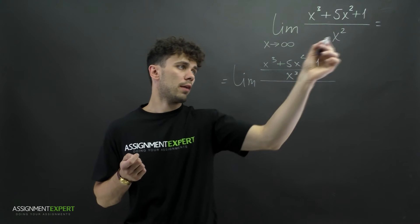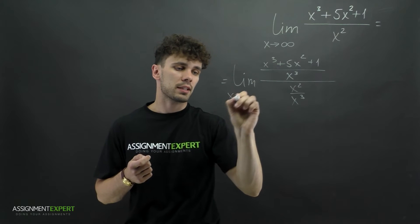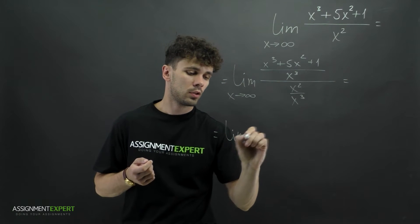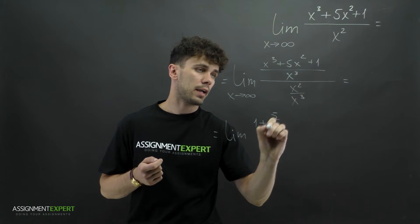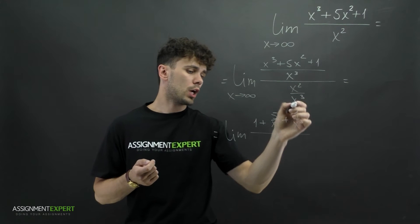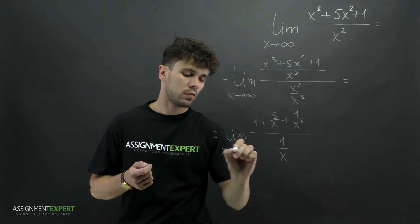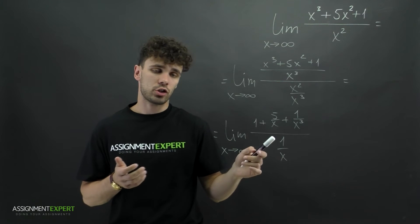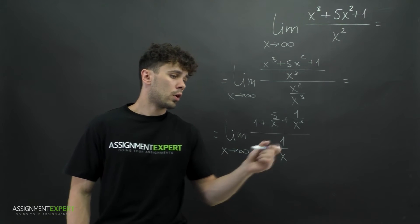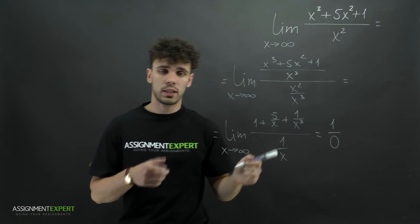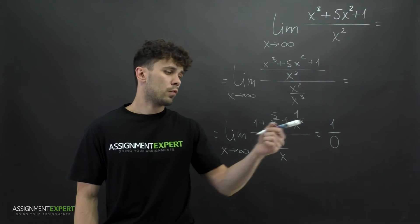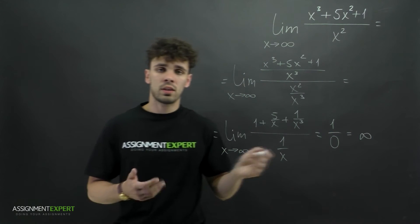We get the limit of (x cubed + 5x squared + 1) over x cubed in the numerator, and x squared over x cubed in the denominator, as x tends to infinity. Dividing each term, we get the limit of 1 + 5/x + 1/x³ over 1/x. The terms with x in the denominator tend to 0 as x tends to infinity, therefore we get 1 over 0. This 0 doesn't mean division by zero — it is an infinitesimal number — so the result of this division is infinity.